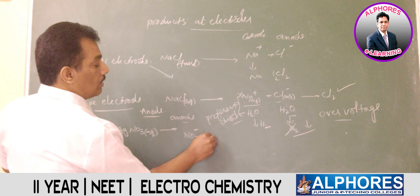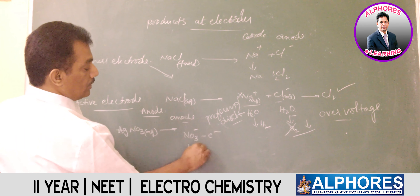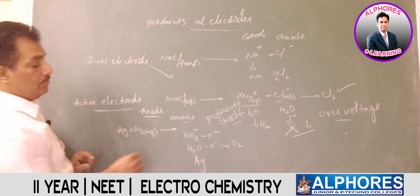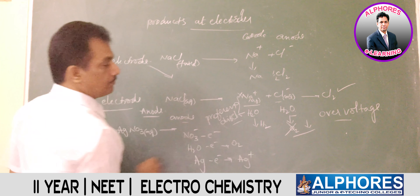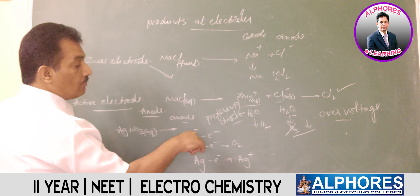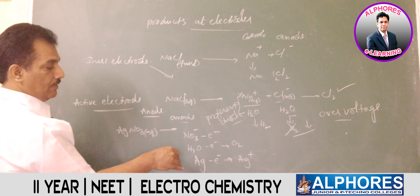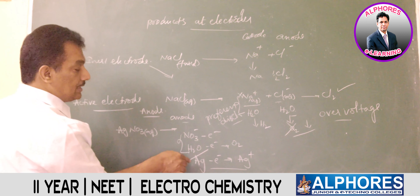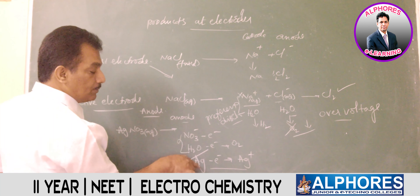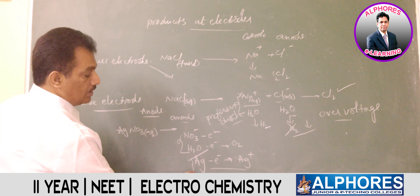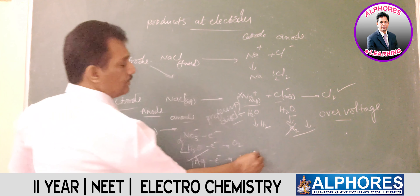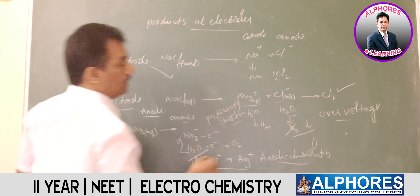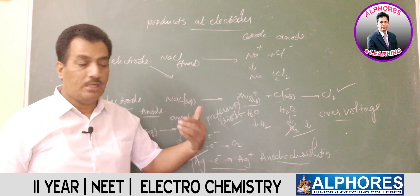With an active electrode in AgNO₃ solution, water is also ready to undergo oxidation to release oxygen, and the active silver electrode metal is ready to undergo oxidation by releasing electrons to give Ag⁺. When an active electrode participates, we do not follow the preferential discharge theory. The silver active electrode is involved in the reaction, and the anode metal rod dissolves in the electrolyte — this is called anodic dissolution.